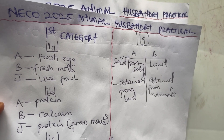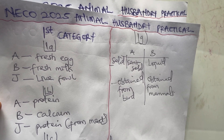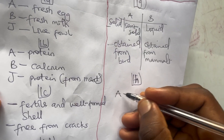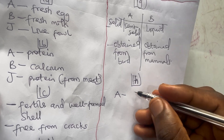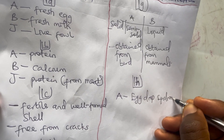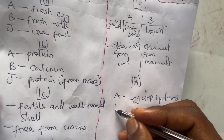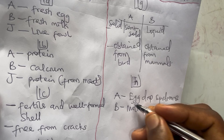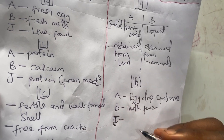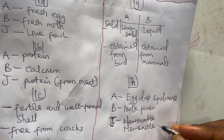They can also ask you to mention one disease associated with each of the specimens. For specimen A (fresh egg), the associated disease is egg drop syndrome. For specimen B (fresh milk), it is milk fever. For specimen J (live fowl), it is Newcastle disease.